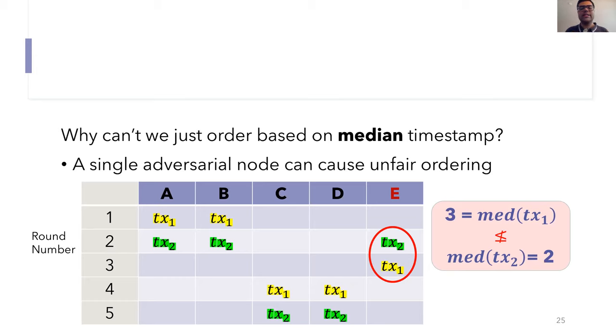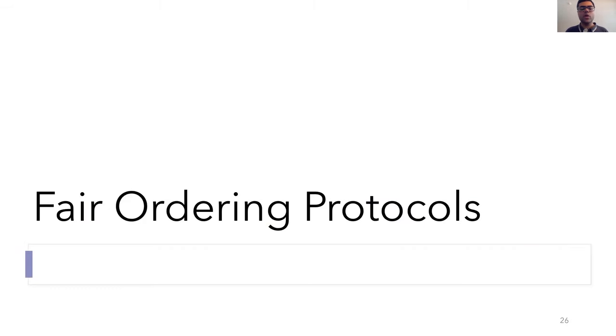So let's say E claims to have received TX2 in round 2 and TX1 in round 3. Now if you calculate the median timestamp, you'll notice that the median for TX1 is 3, which is larger than the median for TX2. So this means that a median timestamp protocol would order TX2 before TX1, even though all honest nodes received the transactions in the opposite order. So this clearly wouldn't work.